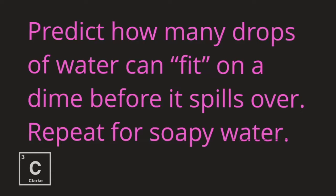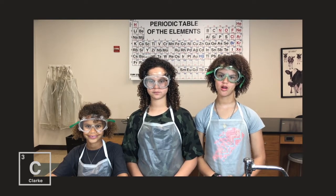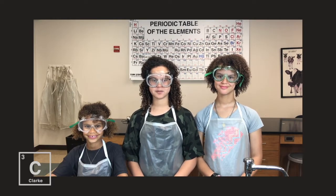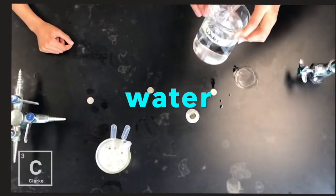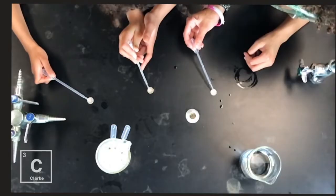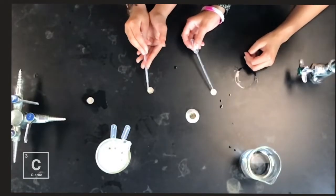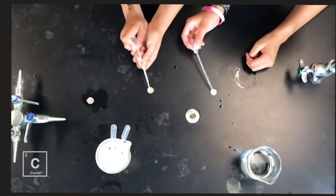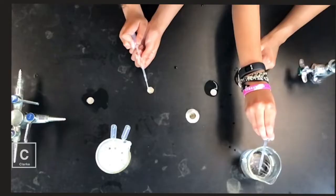Predict how many drops of water can fit on a dime before it spills over. Then repeat for soapy water. I think there's going to be 9 drops of water. I think there's going to be 13 drops of water. I think there's going to be 8 drops of water. Oh no! 24. No, 23.